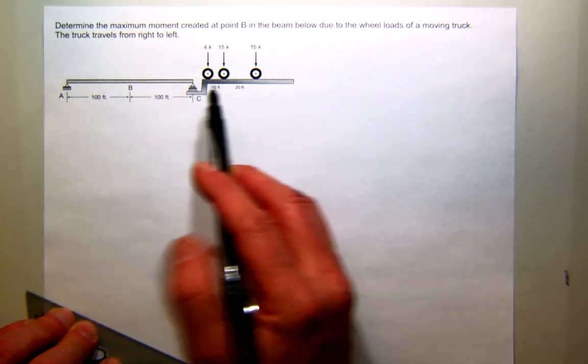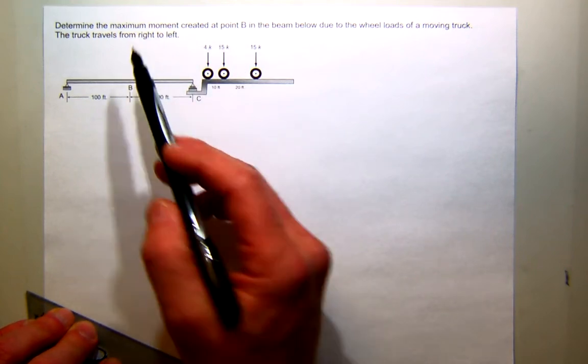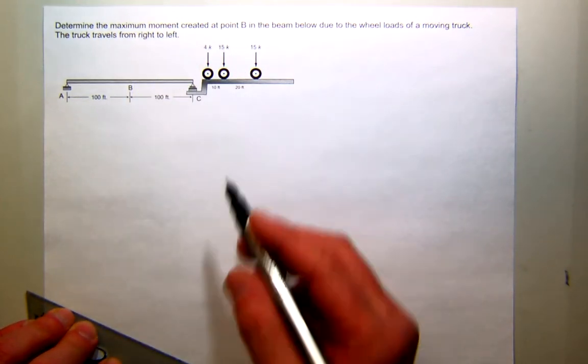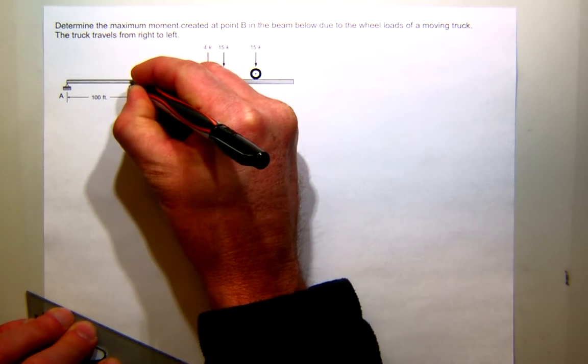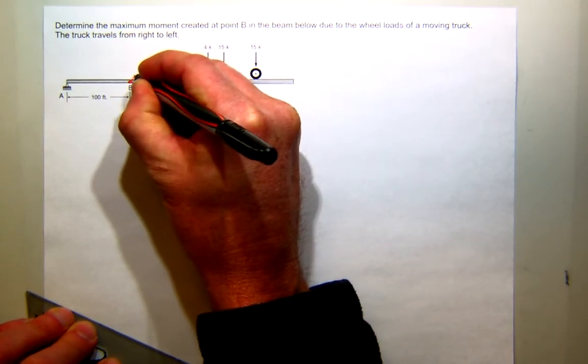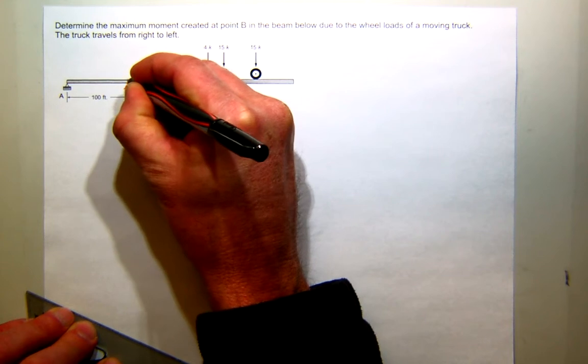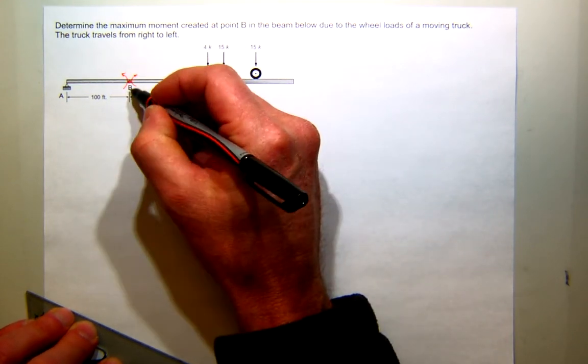As we've talked in class, the first thing we want to do is find the influence line for the moment at B. If you look at it for a second, you can see that if we go to B and put our little hinge, our model to help us with Mueller-Breslau, and then we put our maximum moment on there, point B, is it going to move down or up?